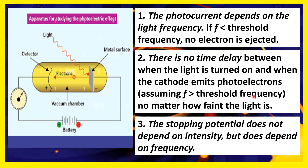The third observation: the stopping potential. There is a certain voltage — called the stopping potential — that can be controlled. This stopping potential does not depend on intensity but does depend on frequency. The stopping potential is the amount of voltage that can be regulated to stop the electrons from moving around the circuit. It does not depend on the intensity of the light, but it does depend on frequency.